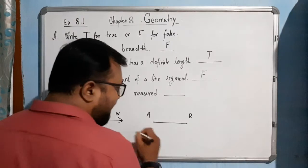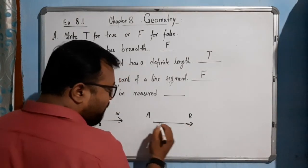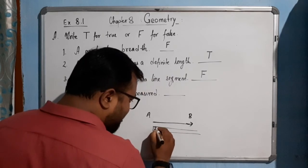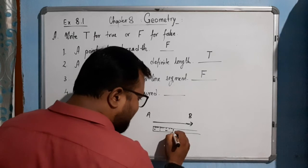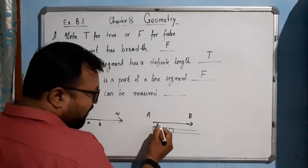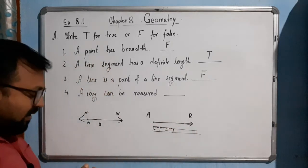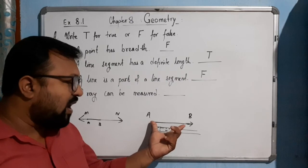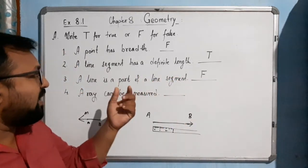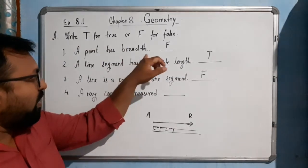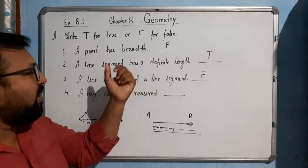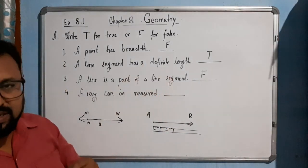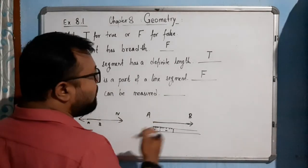Now, 'a ray can be measured' — how can that be possible? In a ray, there is one starting point, so you can place your scale starting from 0. But where will you end, since there is no end point? Point B moves endlessly, so you can't measure it. A ray also cannot be measured, just like a line. Only a line segment can be measured. So 'a ray can be measured' is a false statement.